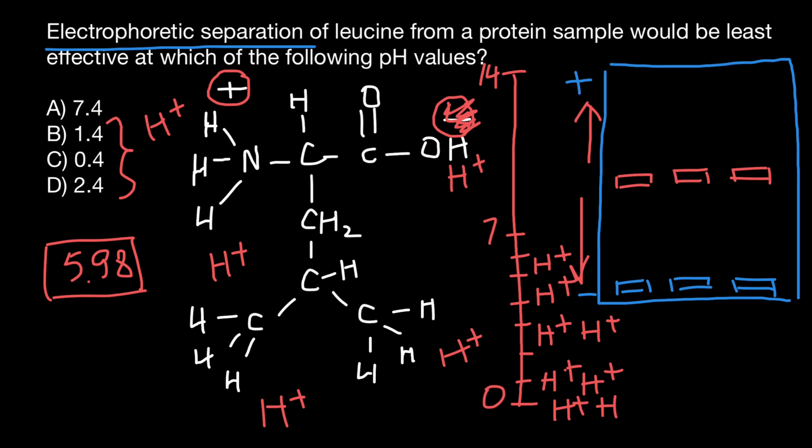Now let's read our question again. Electrophoretic separation of leucine from a protein sample would be least effective, so let me underline least effective, at which of the following values. And of course, when values are going to be very low, pH would be very low. Our amino acid is going to be positively charged and would be easy to separate from the rest.